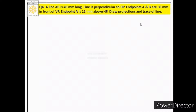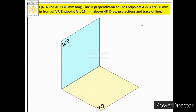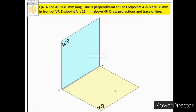Let us understand this case through the pictorial view. We need to identify the quadrant. The statement says 'in front of VP, above HP,' which means the line is in the first quadrant. The pictorial view of the first quadrant is shown here.